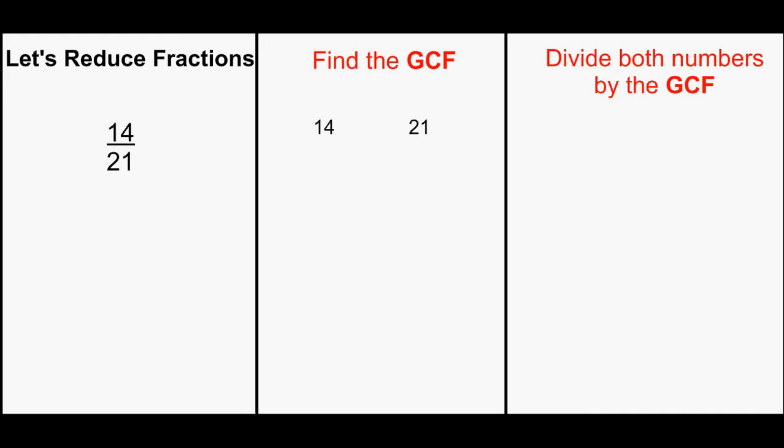Here's our next fraction 14 21sts. To reduce it, we'll first find the GCF. Here are the factors, the common factors, the greatest common factor. The GCF of 14 and 21 is 7.